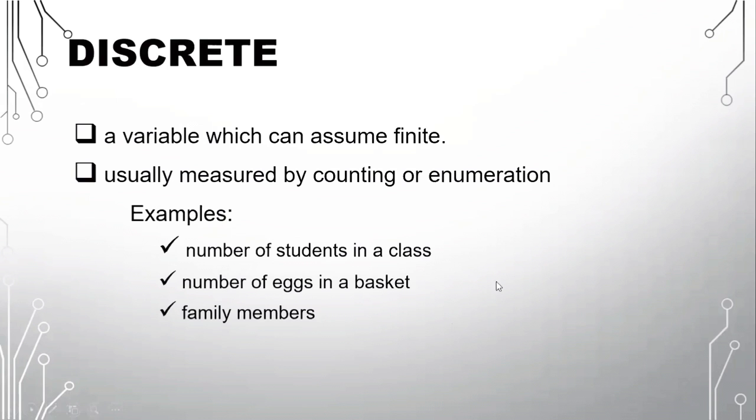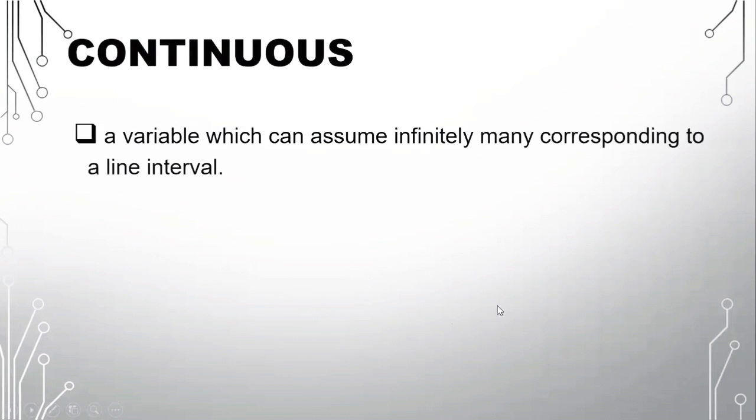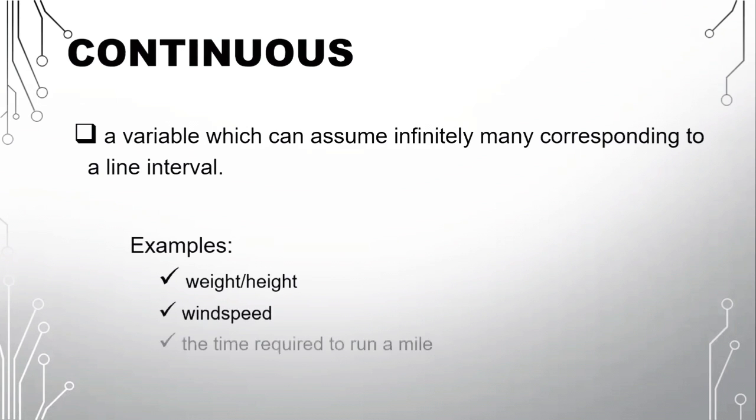While the second type of quantitative variable is the continuous. It is a variable which can assume infinitely many corresponding to a line interval. Examples: height or weight, wind speed, and the time required to run a mile.